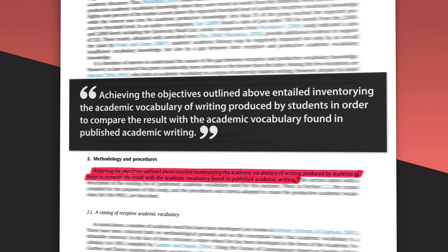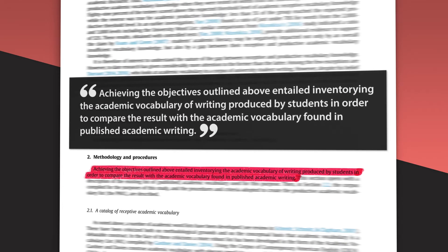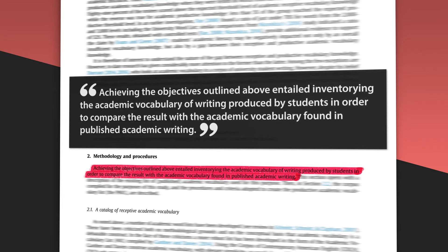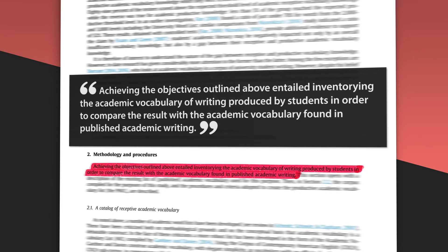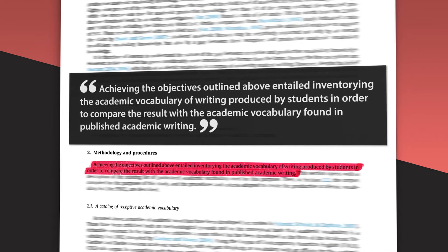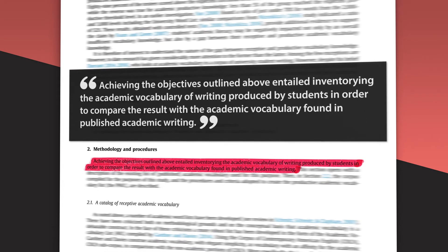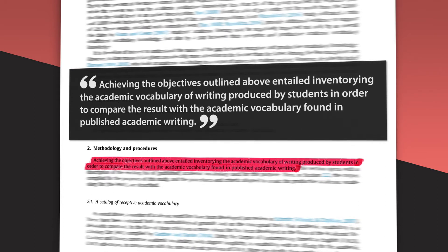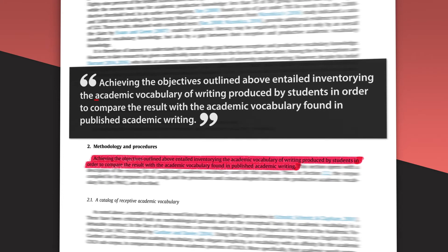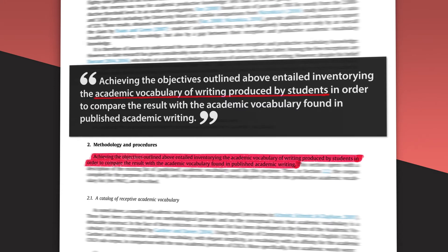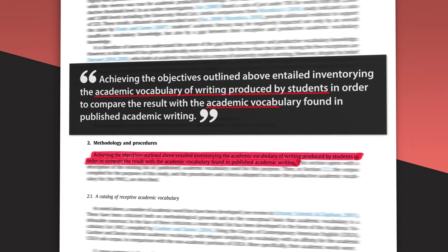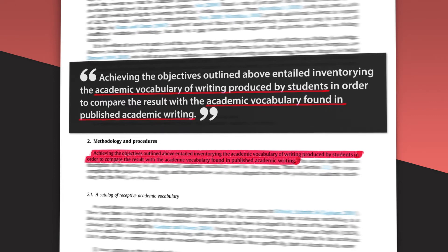The introduction is followed by the methods section, which tells us what the researchers did. 'Achieving the objectives outlined above entailed inventorying the academic vocabulary of writing produced by students in order to compare the result with academic vocabulary found in published academic writing.' The study compared the vocabulary university students use when they write with the vocabulary they need to be able to read.